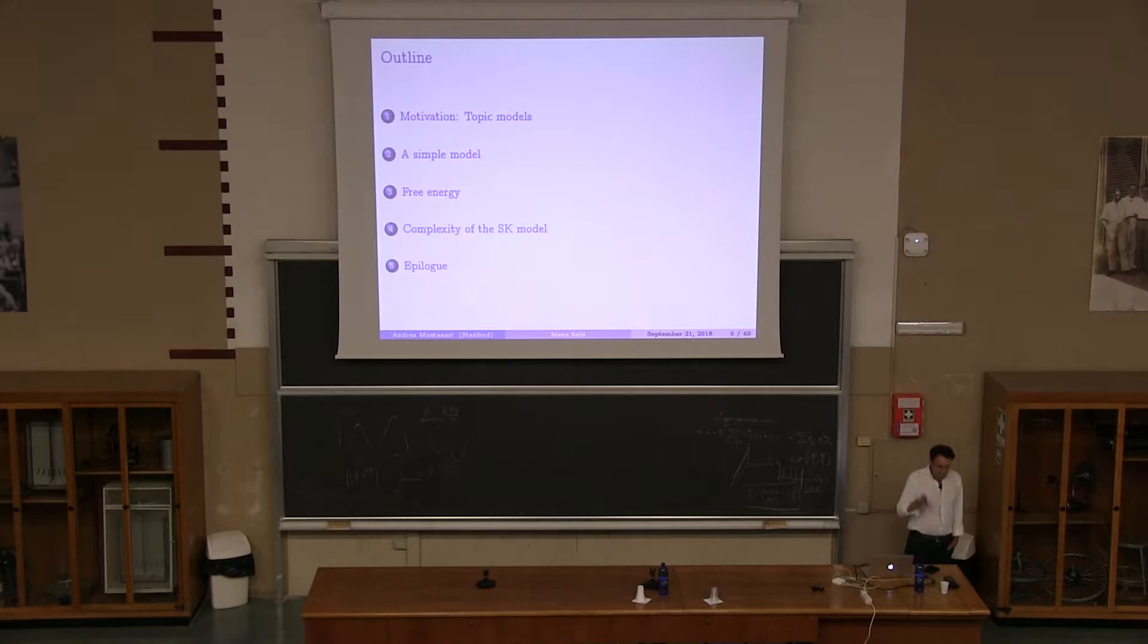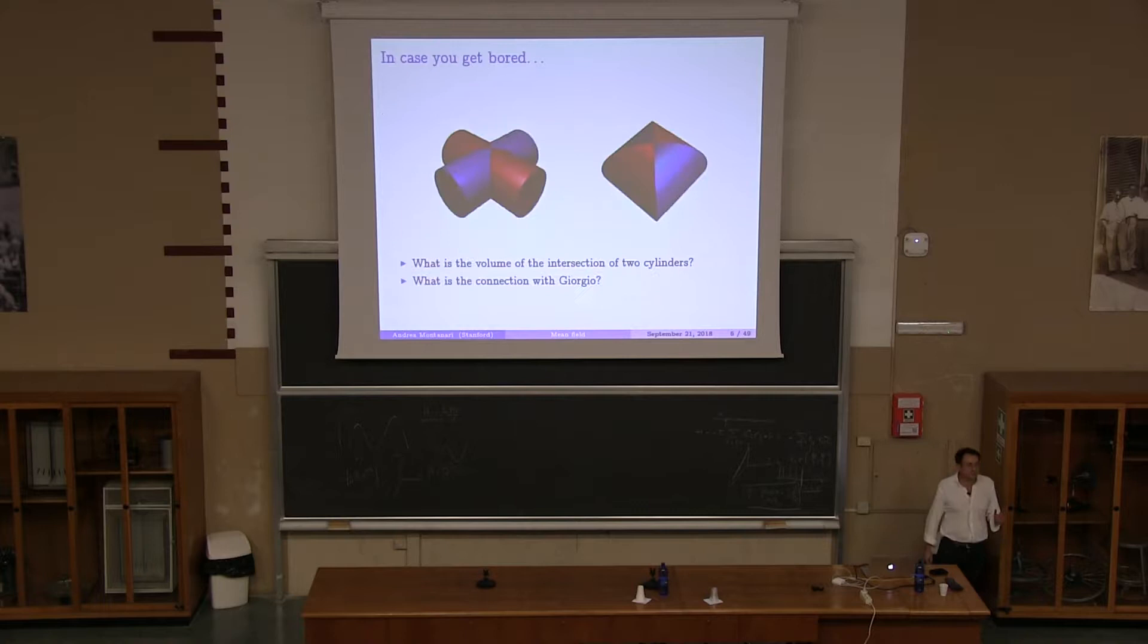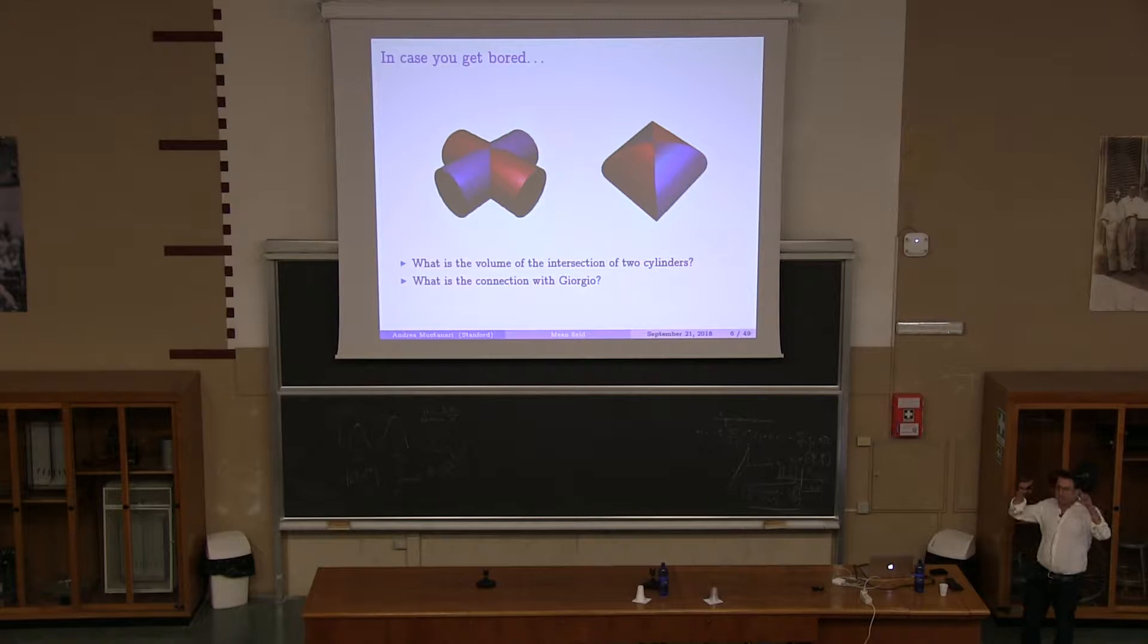So this is the plan of the talk. I spent quite some time talking about motivation that comes from a problem in machine learning that is called topic models. I think it's a good motivation, it's a real problem, and it would be good if this community got interested into it. And then discuss a simple model that, of course, is a spin-glass model, and of course free energy and show how complexity of the SK model plays a crucial role in the proof that we have. And this is a bit technical, and not everybody might be interested in this topic.